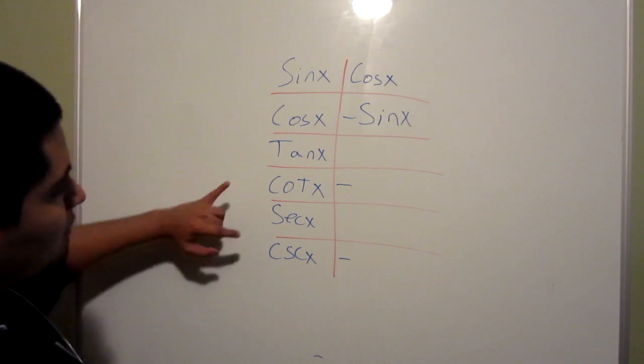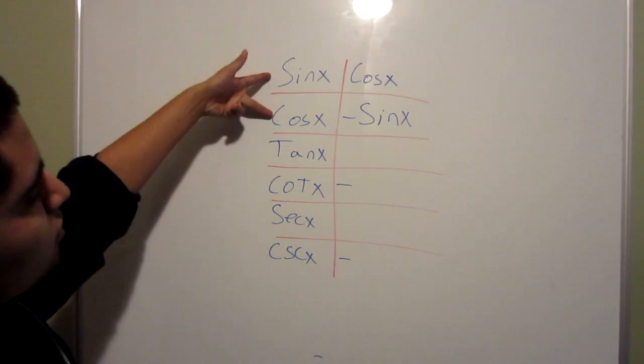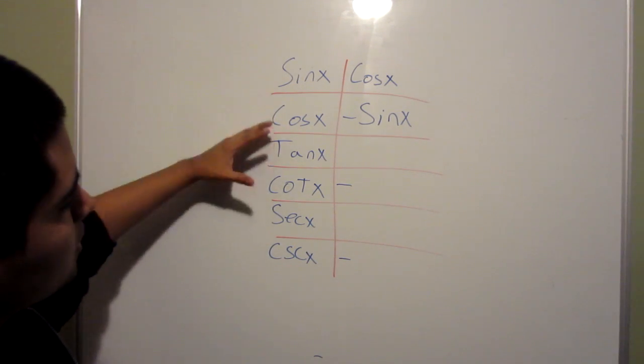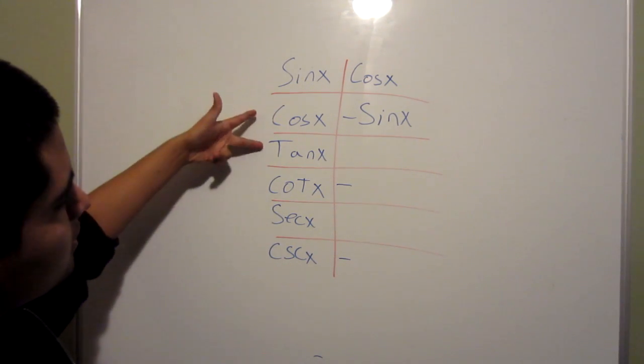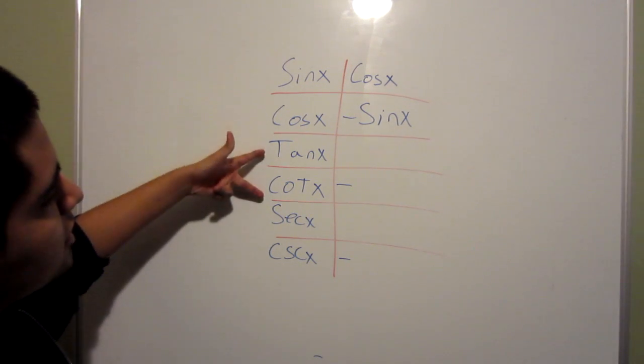And also, every other one correlates with each other. So sine and cosine, just ignore these two. The bottom four, tangent relates to secant and cotangent correlates with cosecant.